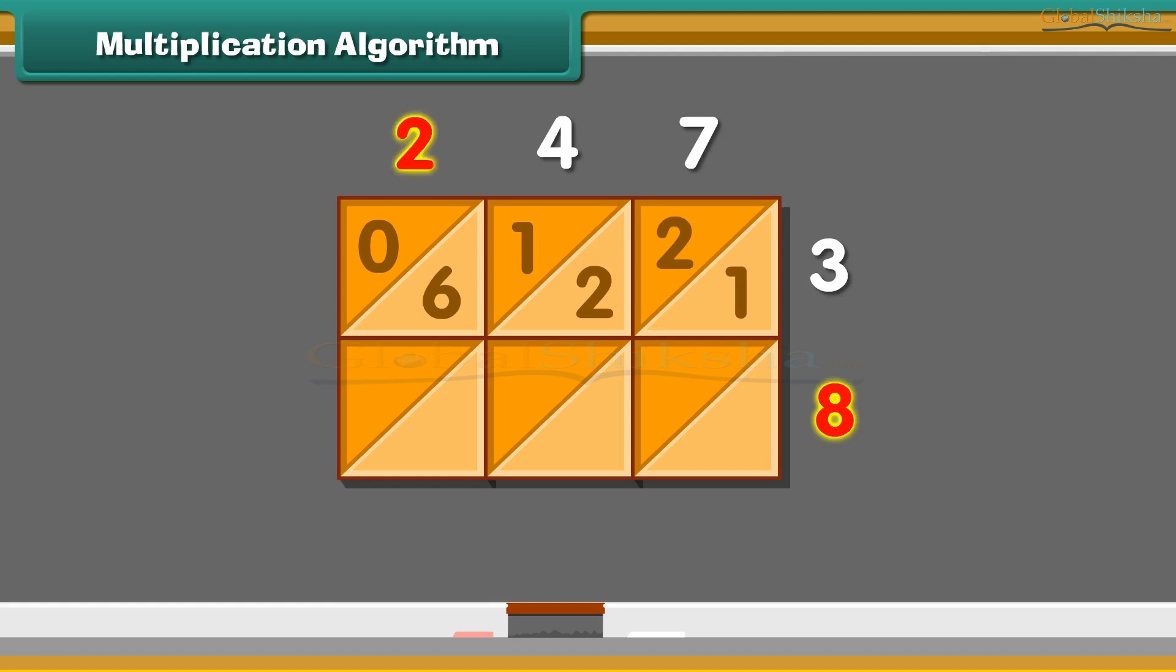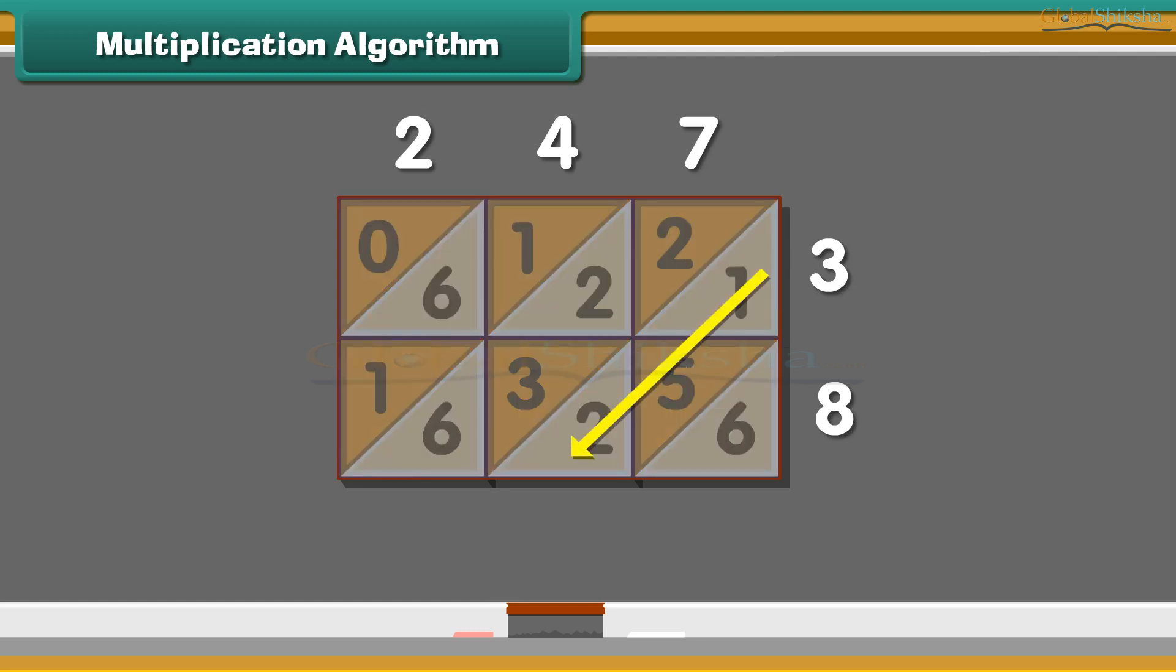Similarly, 8 times 2 is 16, 8 times 4 is 32, and 8 times 7 is 56.